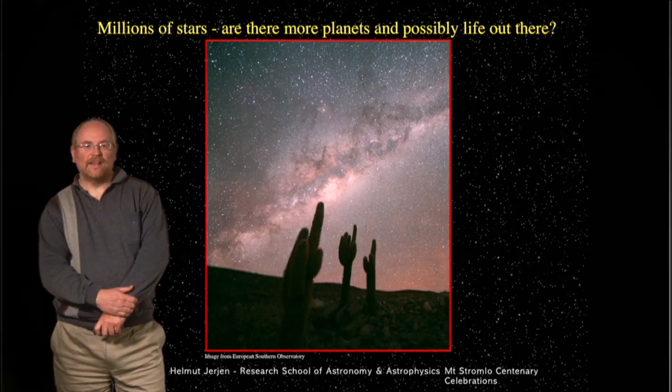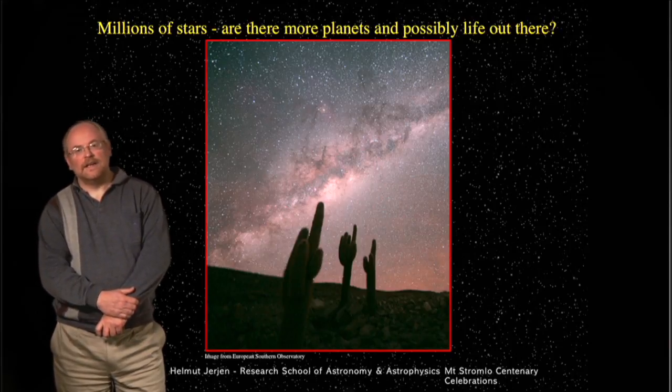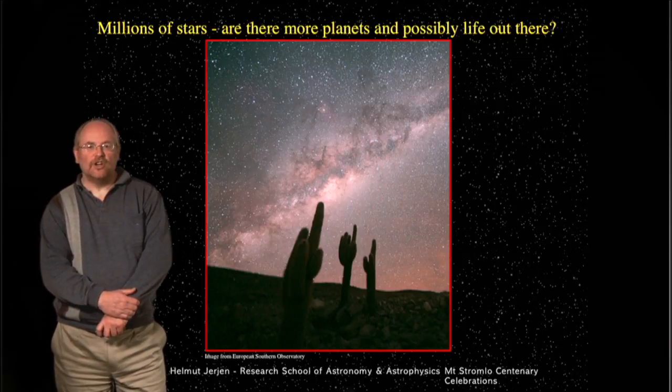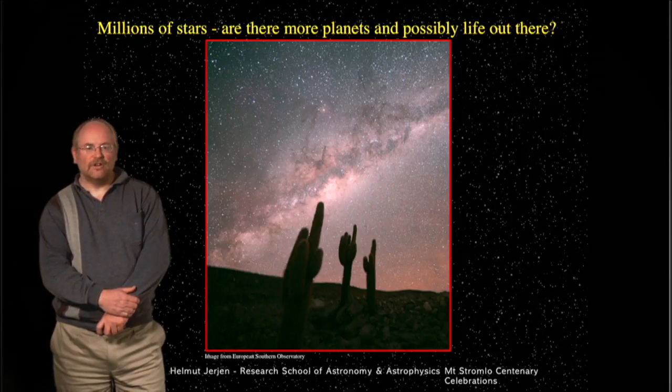Welcome back to the second part of this lecture. My name is Helmut Jurgen. I'm an astrophysicist at the Research School of Astronomy and Astrophysics, which is part of the Australian National University.